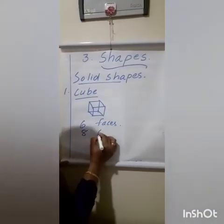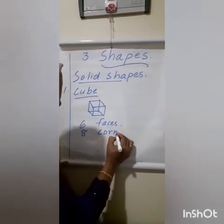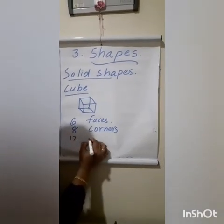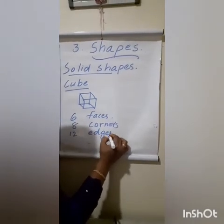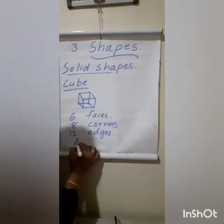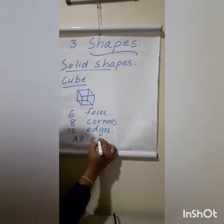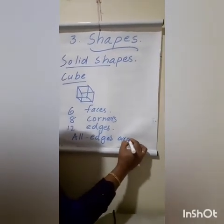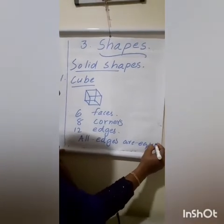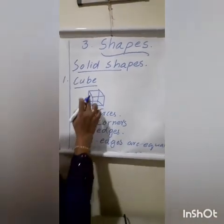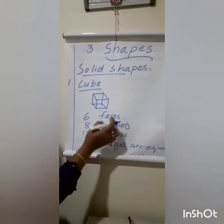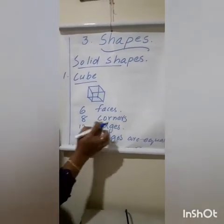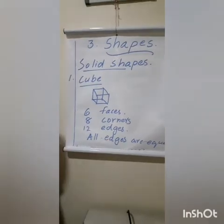Eight corners and twelve edges. All edges are equal. A cube has six faces, eight corners, twelve edges. All edges are equal.